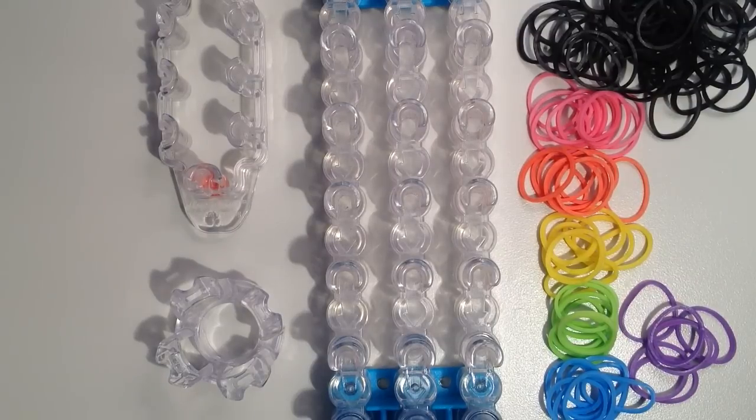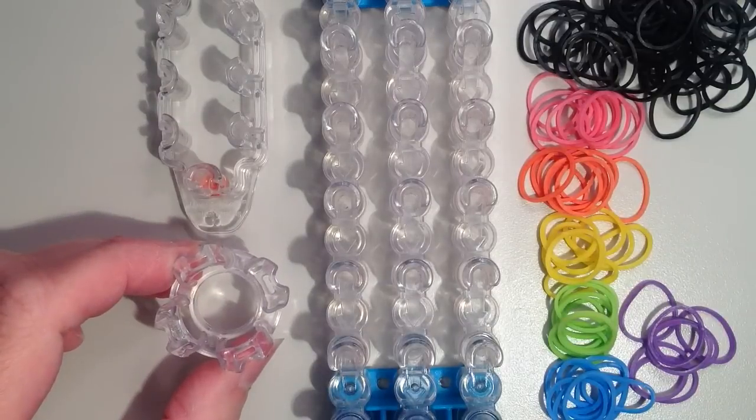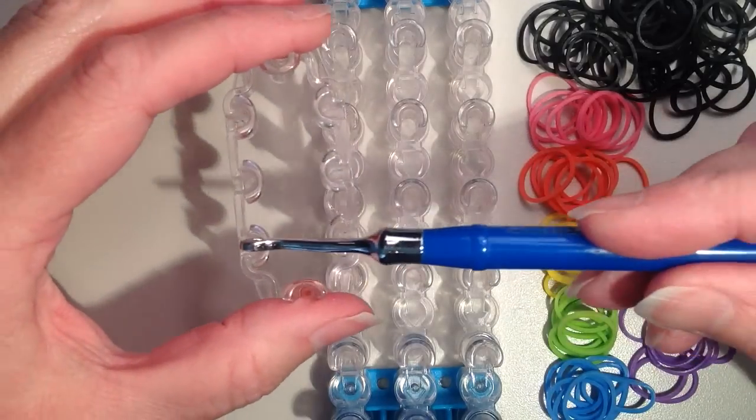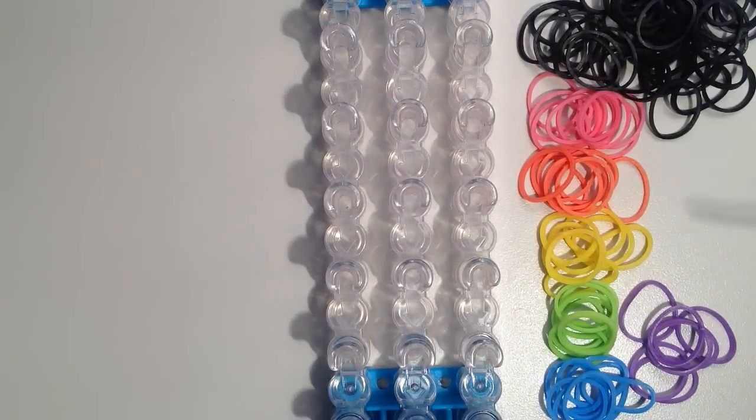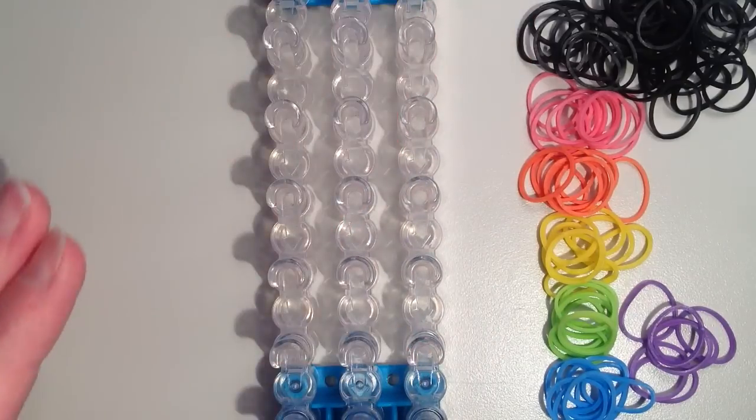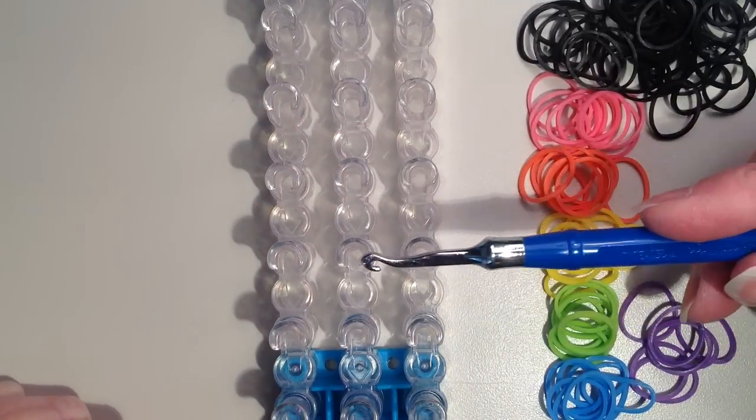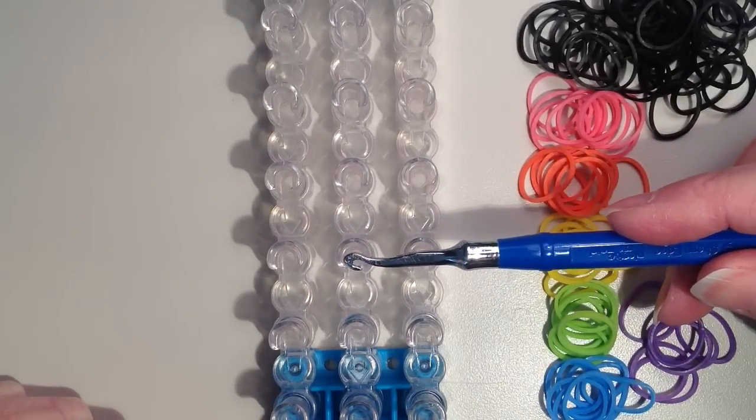It only uses two pins, so if you're using the finger loom, you just want to use two pins that are straight across from one another. If you're using the monster tail loom, you can pick any two pins that are just straight across. I'm going to be showing it on the rainbow loom, and for that you want to have your pins in line with one another, and you would again just use two pins that are next to one another.